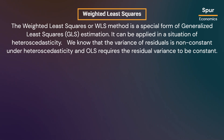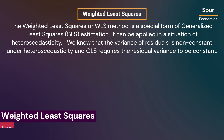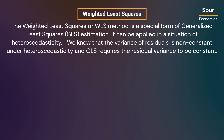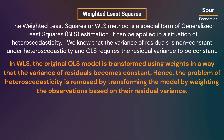The weighted least squares, or WLS, method is a special form of generalized least squares estimation. It can be applied in a situation of heteroskedasticity. We know that the variance of residuals is non-constant under heteroskedasticity, and OLS requires the residual variance to be constant. In WLS, the original OLS model is transformed using weights so that the variance of residuals becomes constant.